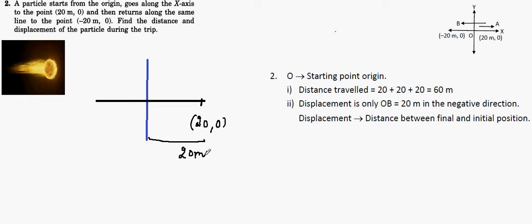And he returned along the same axis, the same line. He returned along the same line up to the origin, and then to the point (-20,0). So this will be the line, and this will be the point (20,0).